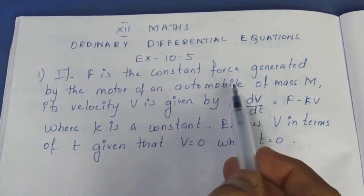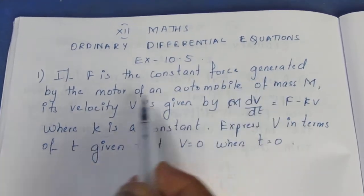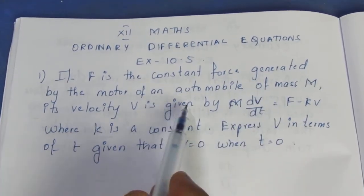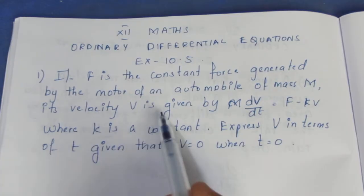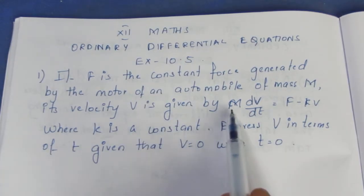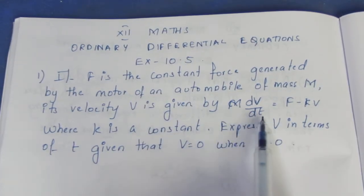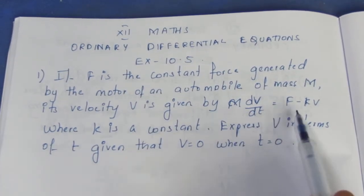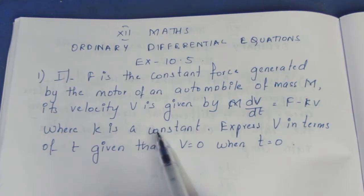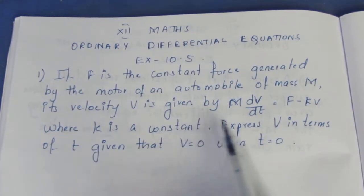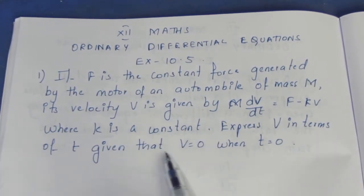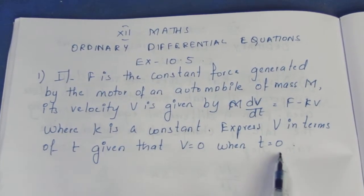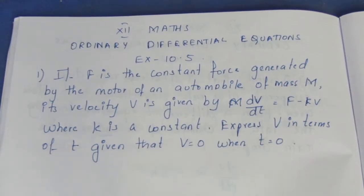If F is a constant force generated by the motor of an automobile of mass M, and its velocity V is given by M dV/dt equal to F minus KV, where K is a constant. Express V in terms of T, given that V equal to 0 when T equal to 0.